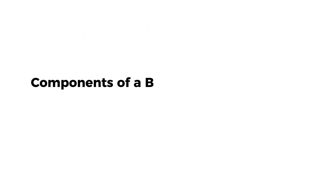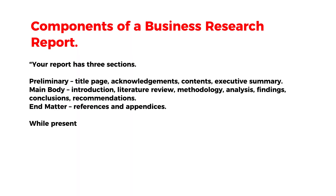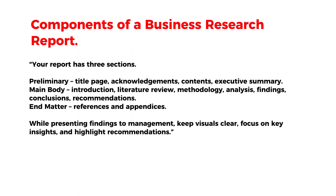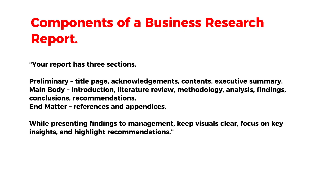Question 8: Components of a Business Research Report. Your report has three sections. Preliminary: title page, acknowledgements, contents, executive summary. Main body: introduction, literature review, methodology, analysis, findings, conclusions, and recommendations. End matter: references and appendices. While presenting findings to management, keep visuals clear, focus on key insights, and highlight recommendations.